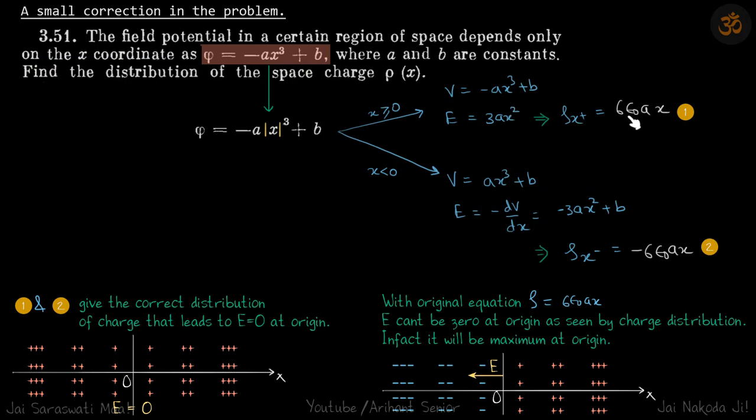And we are going to get the same result 6ε₀ax which we got here. So why we did this then? You'll see it in a moment. So if I put x < 0, then this equation will become ax³ plus b, right?